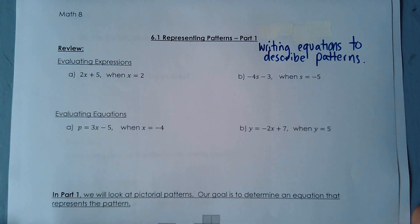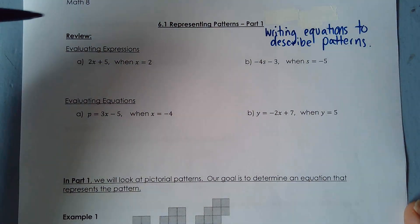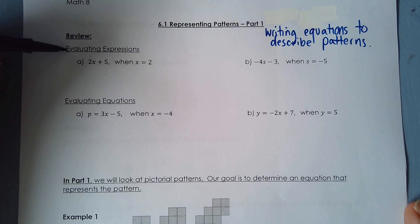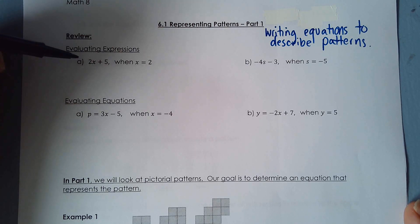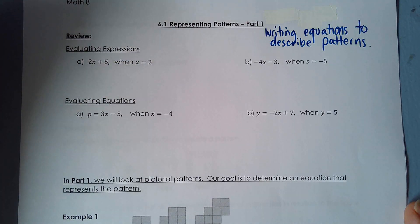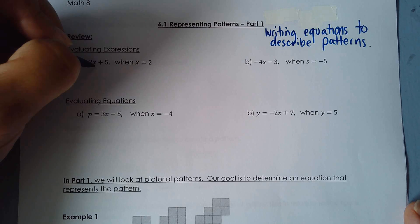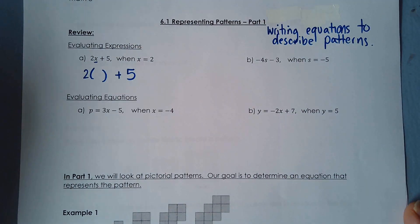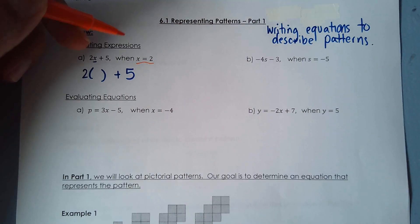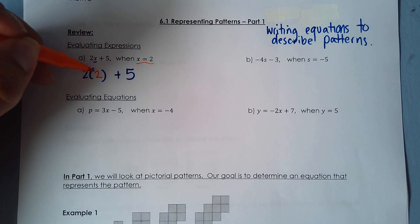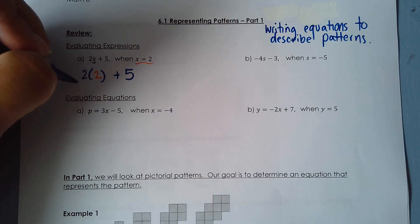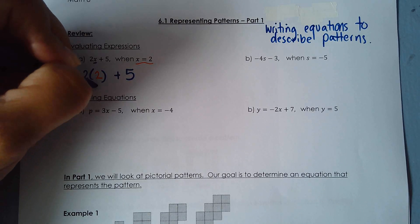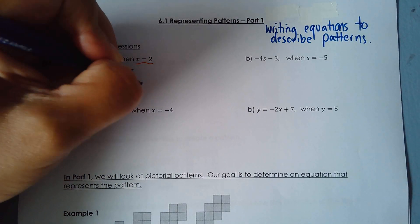Before we get to that, I wanted to do a quick review on evaluating expressions and equations. With evaluating expressions, remember there's no equal sign. For part a, we have 2x plus 5 when x equals 2. Wherever we have a variable, we put in a set of brackets and plug in the value. So we have 2 times 2 plus 4, and remembering your BEDMAS rules, that is 4 plus 5, which is 9.